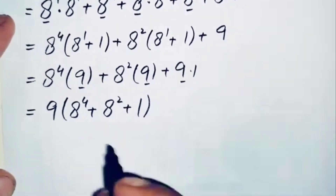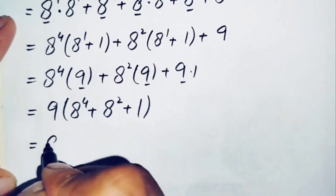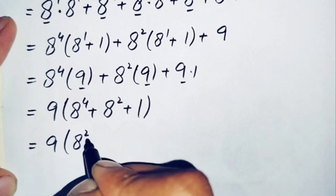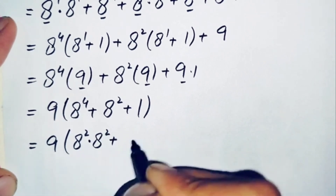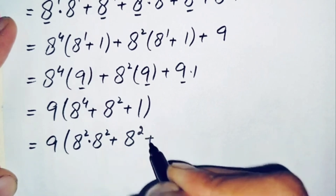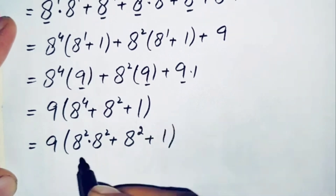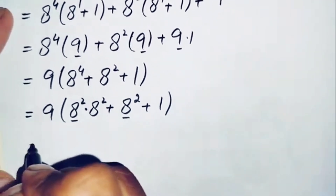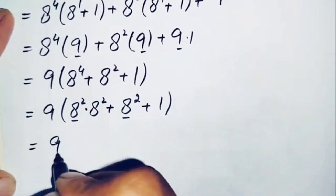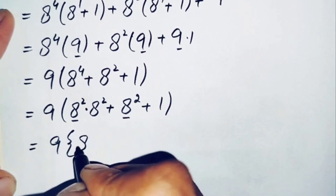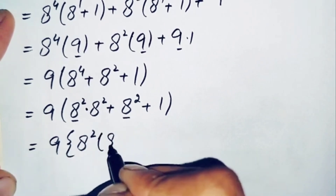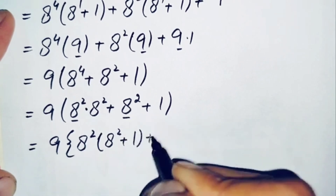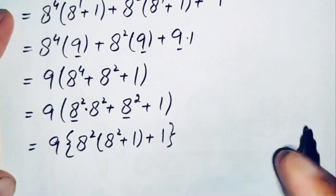Next, we can write a raised to power 4 as a raised to power 2 times a raised to power 2. So this becomes 9 times (a raised to power 2 times a raised to power 2 plus a raised to power 2 plus 1). Now taking a raised to power 2 common from the first two terms inside the parenthesis, giving 9 times a raised to power 2 times (a raised to power 2 plus 1) plus 1.